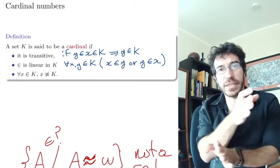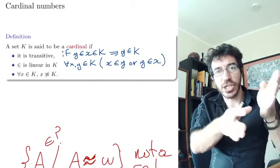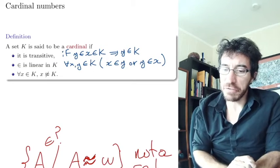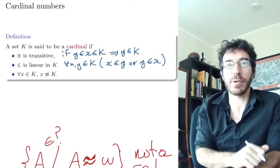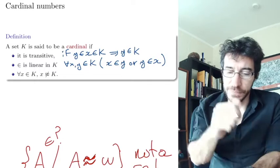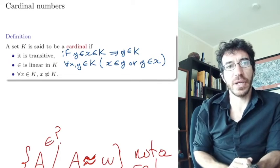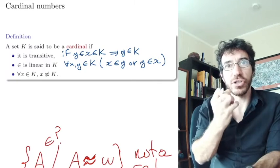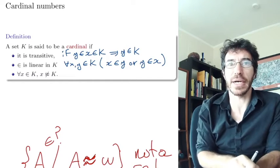That's what it means to be linear. So all the elements are inside, they belong to each other, one way or another. And the last one is every element that is in K is not equimorphic to it, equinumerous to it. So they are all essentially smaller, all the members are smaller.